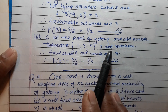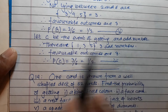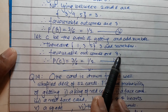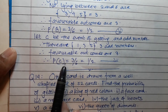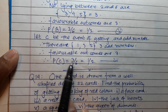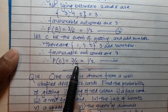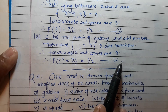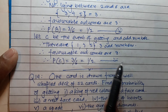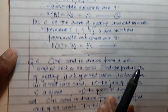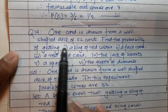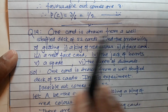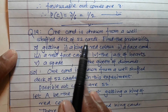Let C be the event of getting an odd number. Odd numbers are one, three, five — three odd numbers. Favorable outcomes are three, and hence P(C) is equal to three upon six, that is one upon two. Answer number three. Okay, question number 14: one card is drawn from a well-shuffled deck of 52 cards.